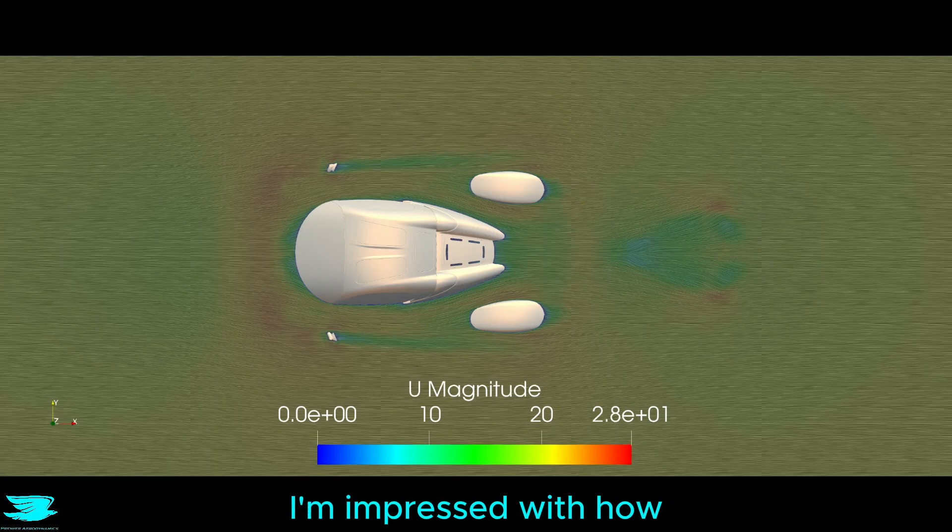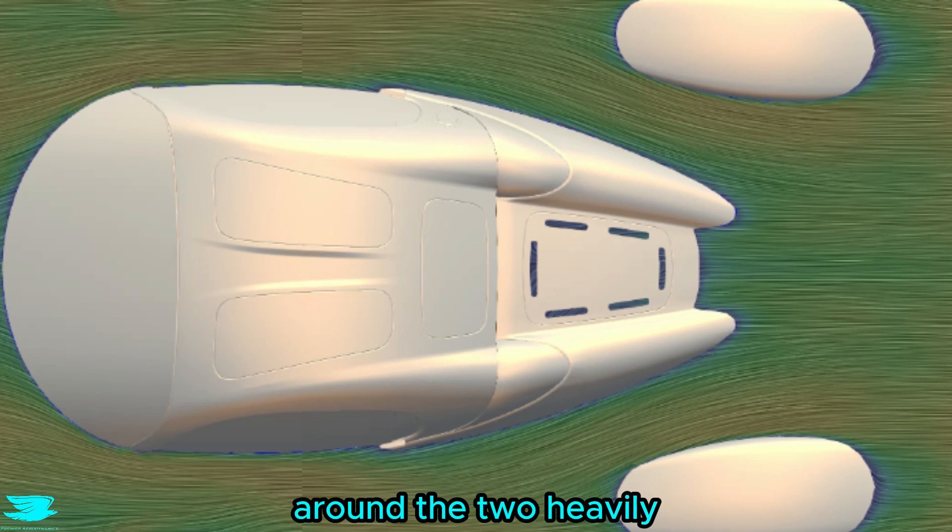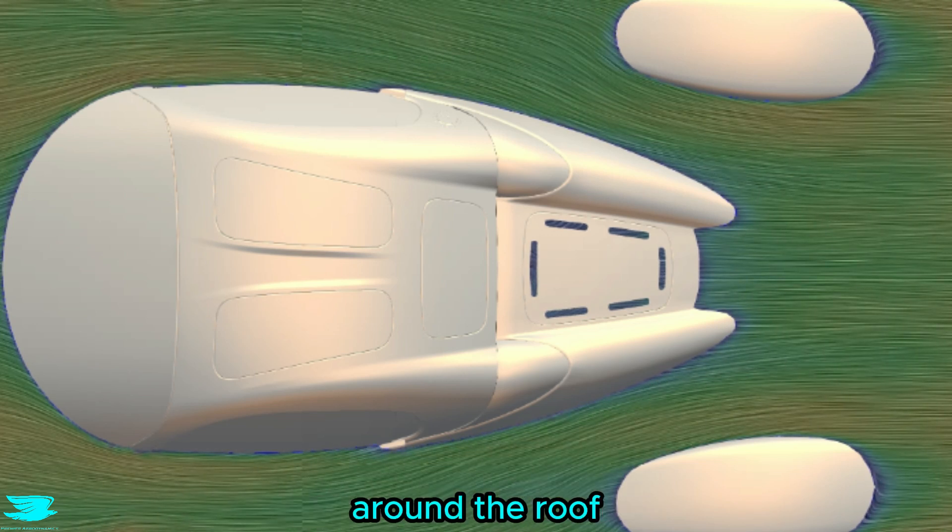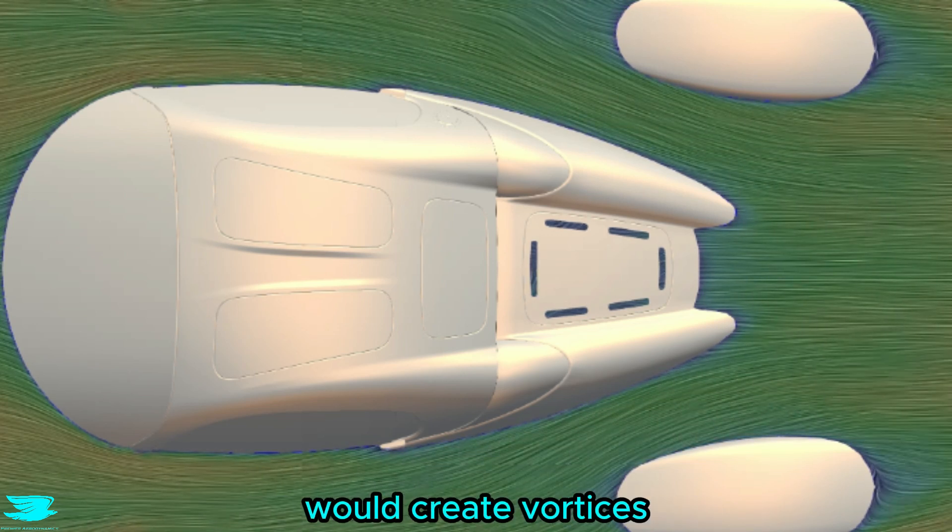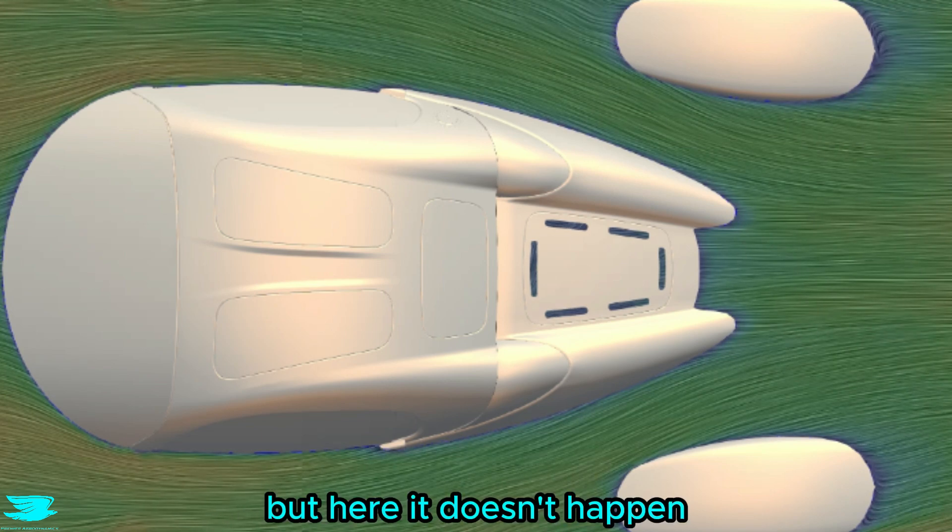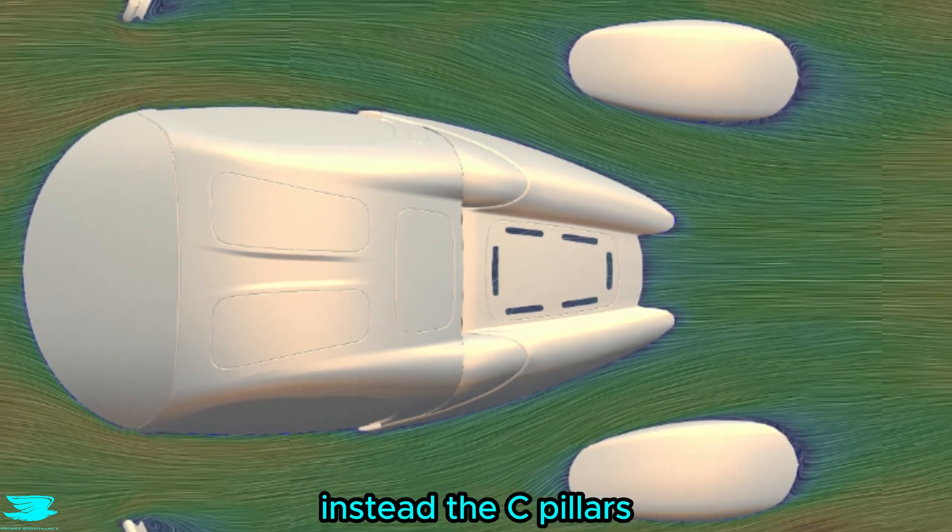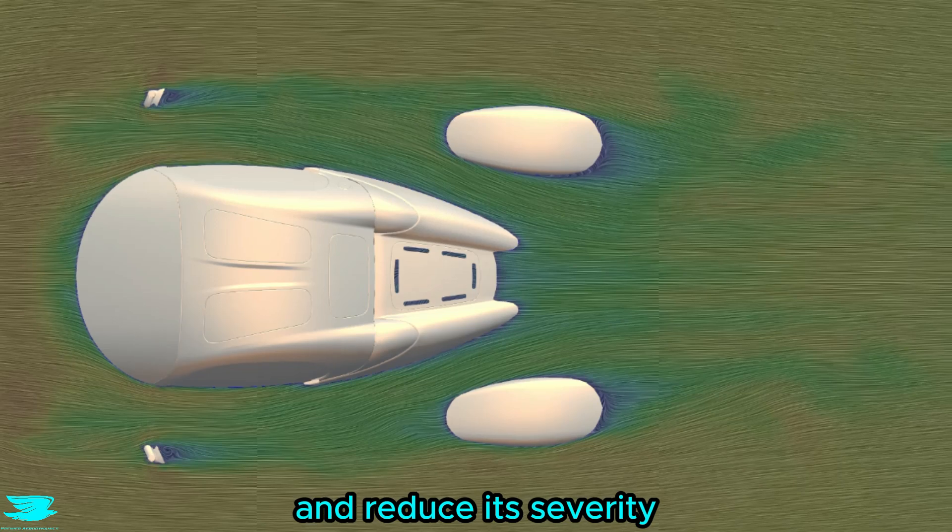Looking further up the car, I am impressed with how well the flow travels around the two heavily exaggerated C pillars. Usually the flow curves around the roof and having such large C pillars would create vortices, but here it doesn't happen. Instead, the C pillars are used to direct the flow into the wake region and reduce its severity.